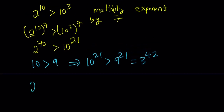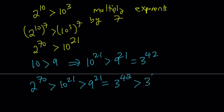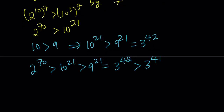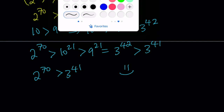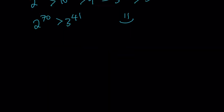So let's go ahead and put it all together. We're going to start with 2 to the power 70. We know that it's greater than 10 to the power 21, which is greater than 9 to the power 21, which can be written as 3 to the power 42, which is greater than 3 to the power 41. As a conclusion, we can safely say that 2 to the power 70 is greater than 3 to the power 41. Case closed.